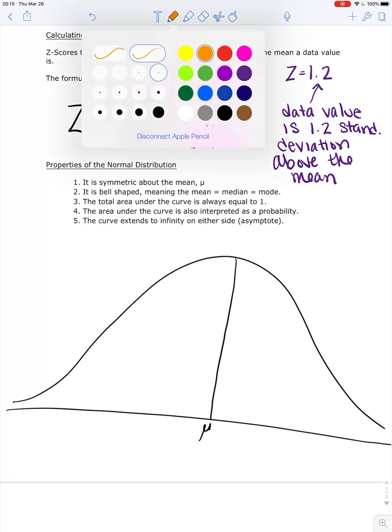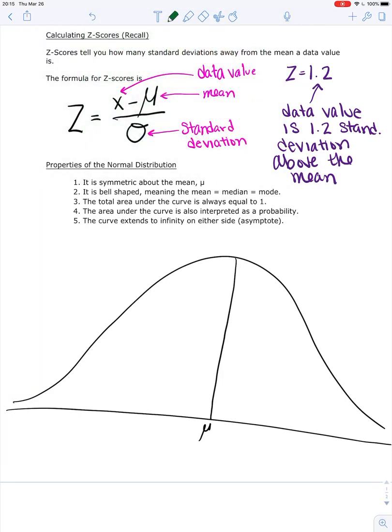The other thing that we want to remember is when we first saw this distribution, when we first saw this shape, remember we were looking at a histogram. Okay, so we want to remember that when we're looking at this shape, there's an imaginary histogram of the data underneath it. We don't draw the histogram because we don't always have that information. But that's how we identify this shape is from a histogram. So again, I'm going to erase all that.